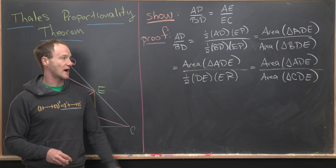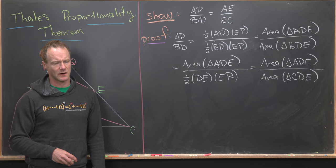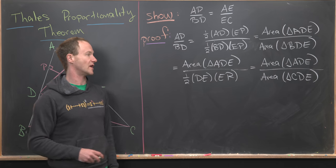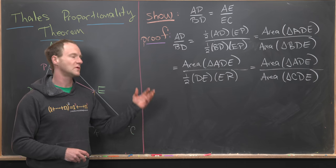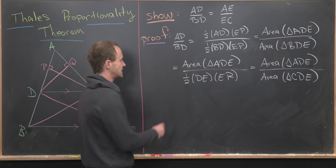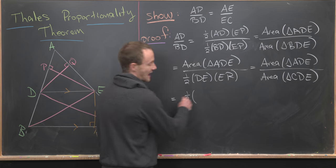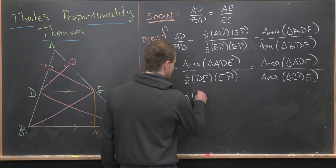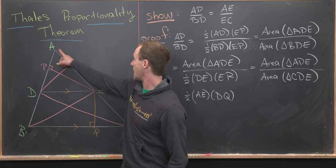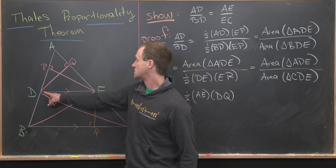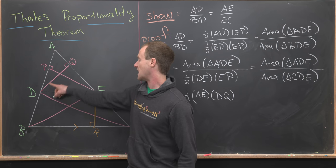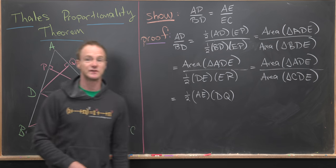Now we will re-express the numerator and denominator as one half base times height, but we'll use a different expression for each. For the numerator, we can write this as one half AE DQ. If we use this as our base, then this line segment DQ serves as an altitude. That checks out.